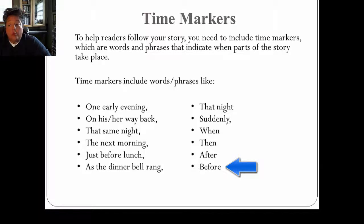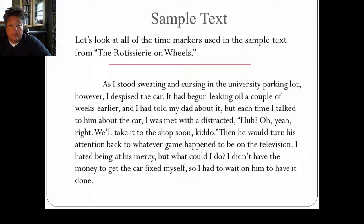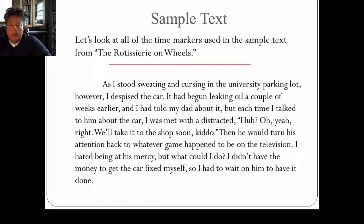These are all time markers that you put into your story in strategic places to let the reader know the sequence of events. Let's look at some of the time markers used in this sample text from 'The Rotisserie on Wheels': 'As I stood sweating and cursing in the university parking lot, however, I despised the car. It had begun leaking oil a couple of weeks earlier, and I had told my dad about it. But each time I talked to him about the car, I was met with a distracted, "Huh? Oh, yeah, right. We'll take it to the shop soon, kiddo." Then he would turn his attention back to whatever game happened to be on television. I hated being at his mercy, but what could I do? I didn't have the money to get the car fixed myself, so I had to wait on him to have it done.'